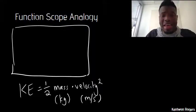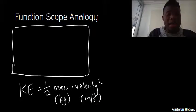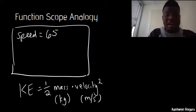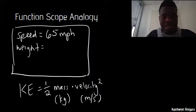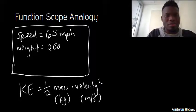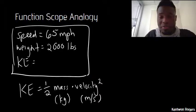In our online homework scope, they gave us that the speed is, let's say, 65 miles per hour, and let's say the weight is 2,000 pounds. But we want to input the kinetic energy.